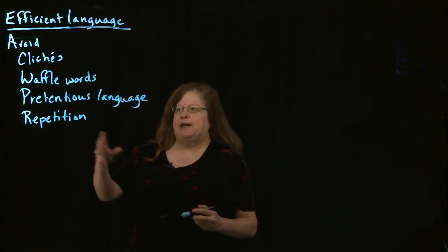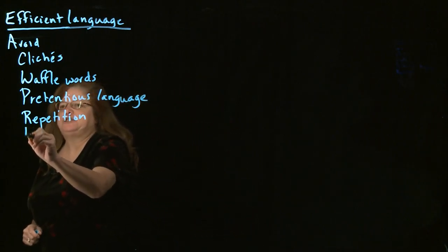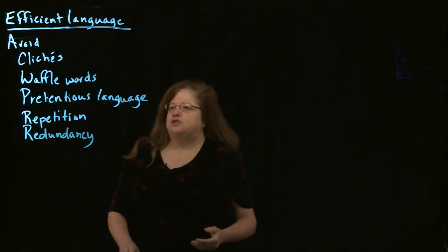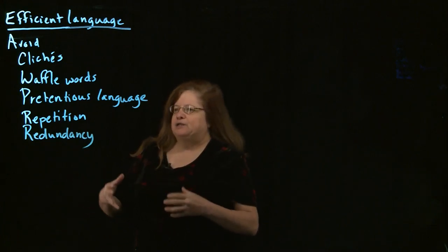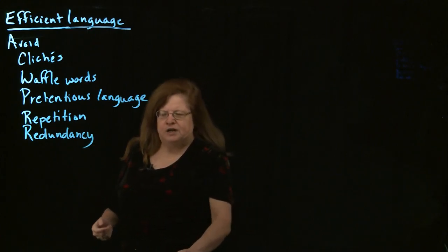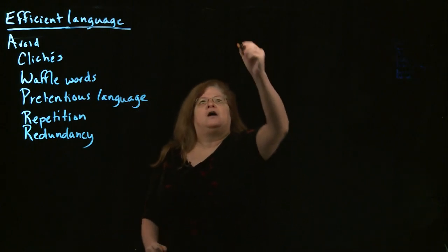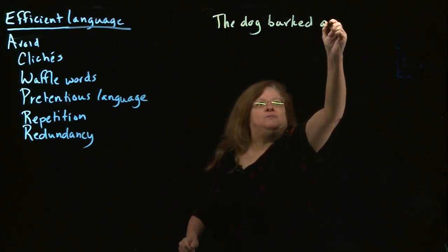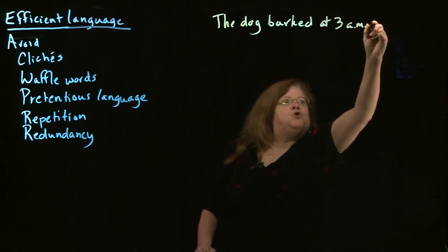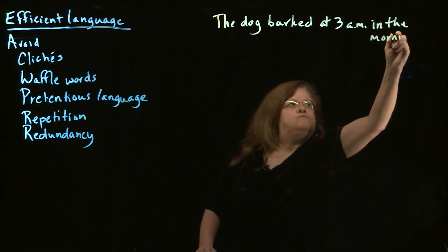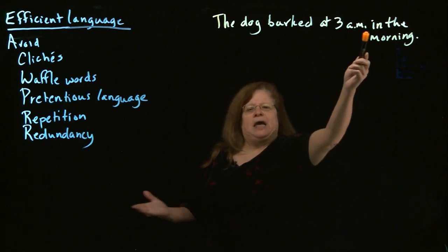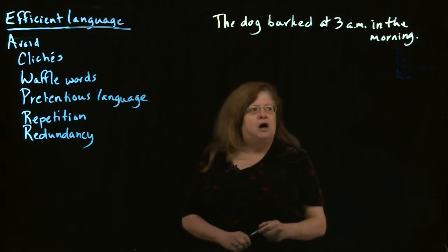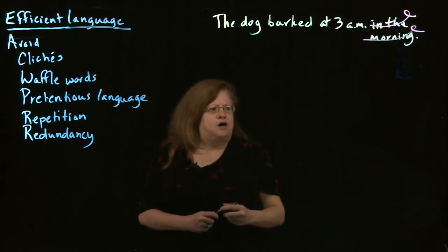Another kind of inefficient language that's actually similar to repetition is redundancy. Redundancy means using two or more words that both mean the same thing, so you've got extra words because of that. For example, I will often see something like 'the dog barked at 3 a.m. in the morning.' This is extra words because a.m. means morning. So I can either say 'the dog barked at 3 a.m.' or 'the dog barked at 3 in the morning.' I don't need both — just say 'the dog barked at 3 a.m.'